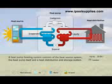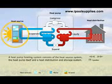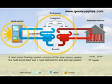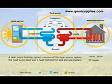A heat pump heating system consists of the heat source system, the heat pump itself, and a heat distribution and storage system.